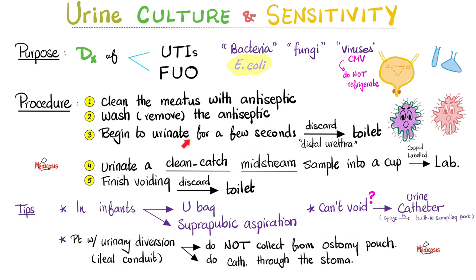Back to the suprapubic aspiration: what type of needle do we use? A 25-gauge needle. Where should I insert it? One inch above the symphysis pubis in the midline. If the patient wants to collect the sample at home and bring the cup to the hospital — no, because by the time this happens the sample will be contaminated. It's got to be fresh, so it's better to have the patient in or near the lab.